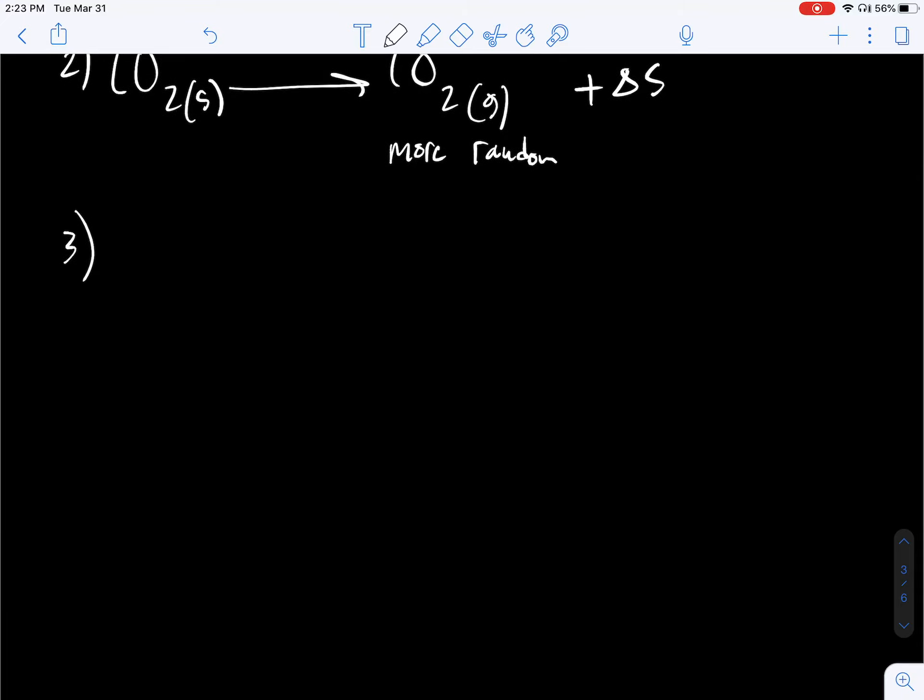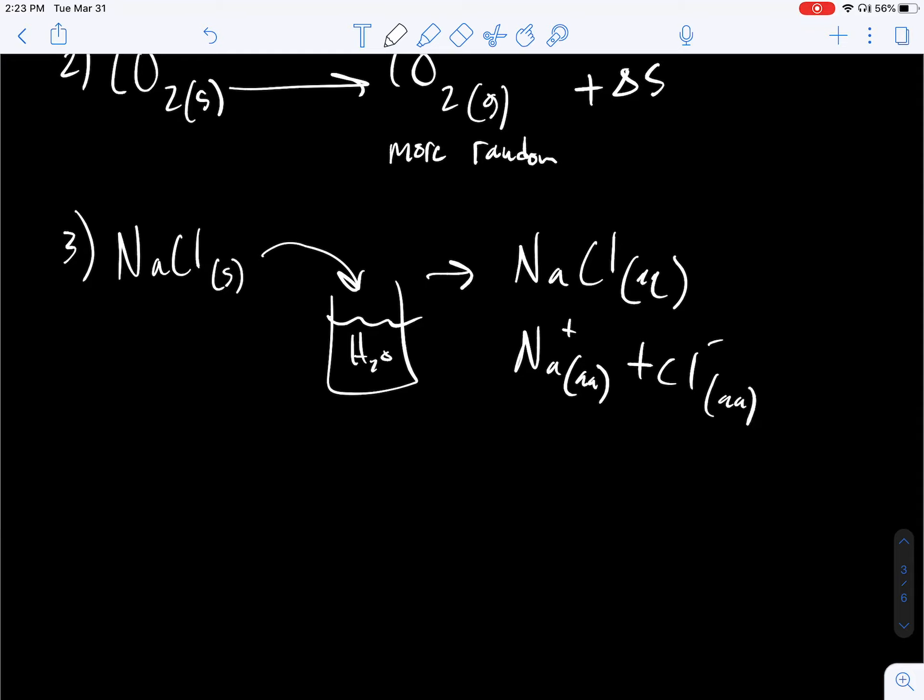Number three, let's say we take NaCl and we plunk it into some water. Now we've got NaCl aqueous. And essentially, this is more disorder now, too. We took a highly crystalline solid, broke it apart, and we have now sodium plus and chlorine minus. From the sodium chloride's perspective, this system is now more disordered as an aqueous system. So this is also positive delta S.